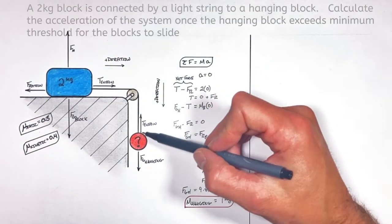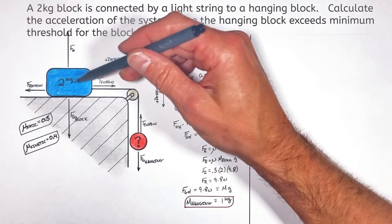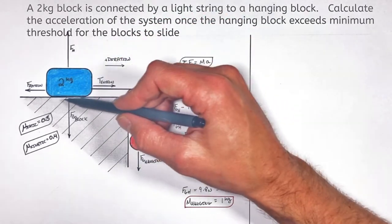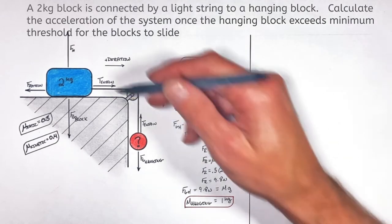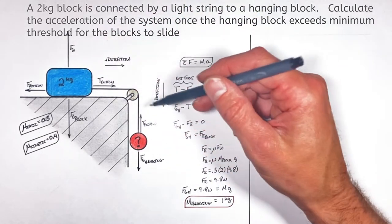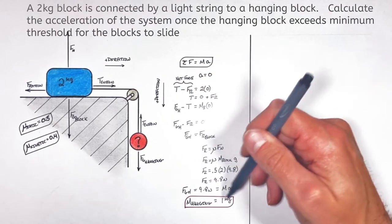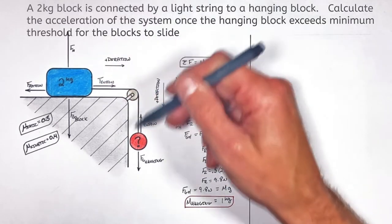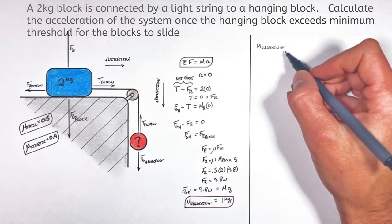All right folks, in the last problem we took a look at the minimum value of mass hanging right here that will cause this block to slide along this rough level surface. In this problem I want to take a look at the acceleration of the system, or the acceleration of these blocks, if we were to exceed that minimum value of mass in this situation. So let's go ahead and say there's a hanging mass equal to two kilograms.